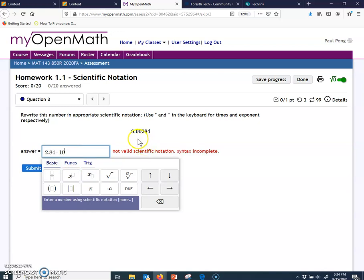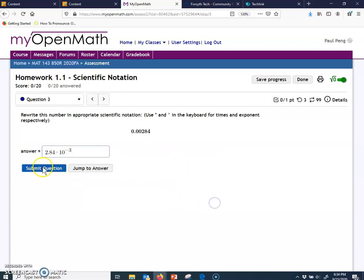You just find the negative in your keyboard. And then 3. And then click submit. Yeah, that's all. Thank you.